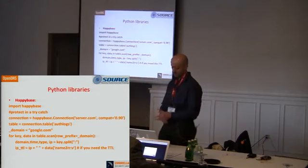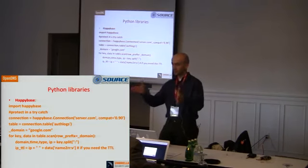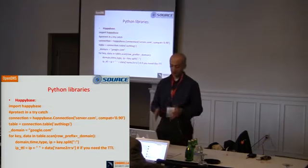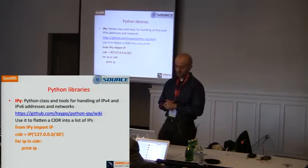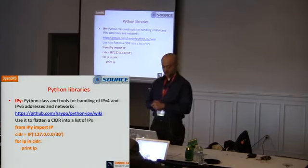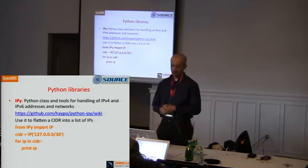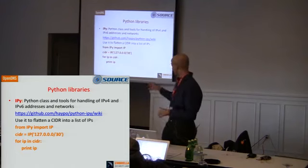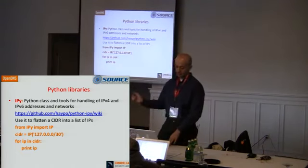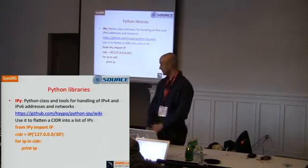Once you get the scan results, you can split and process different parts to filter by time range, IP range, or TTL range. Another interesting library is IPy, which helps with manipulating CIDRs and IPs. You can get a list of CIDRs, flatten them to get a list of IPs, and then do lookups. You just import IPy, assign the prefix to a variable, iterate through it, and get all the IPs.